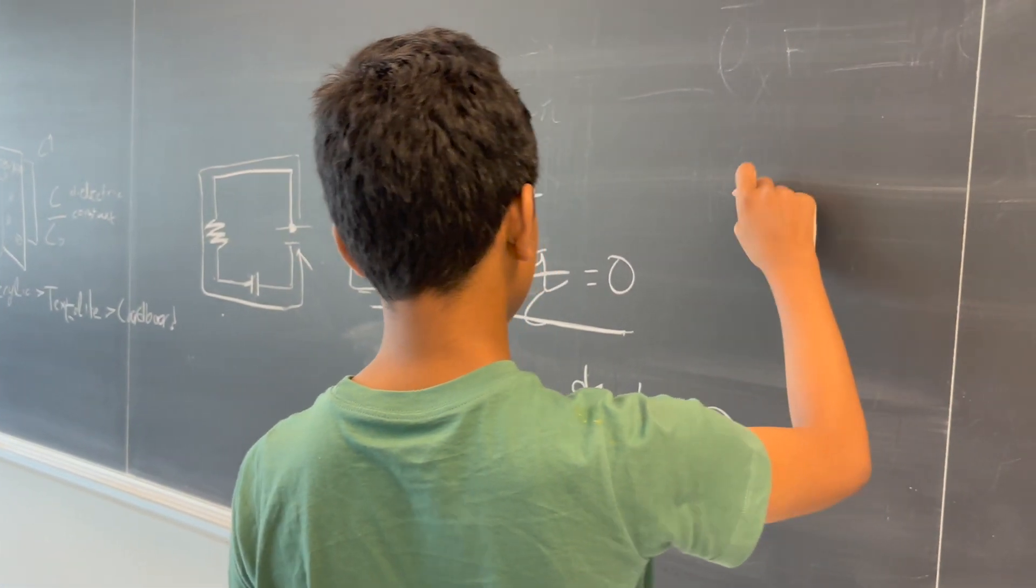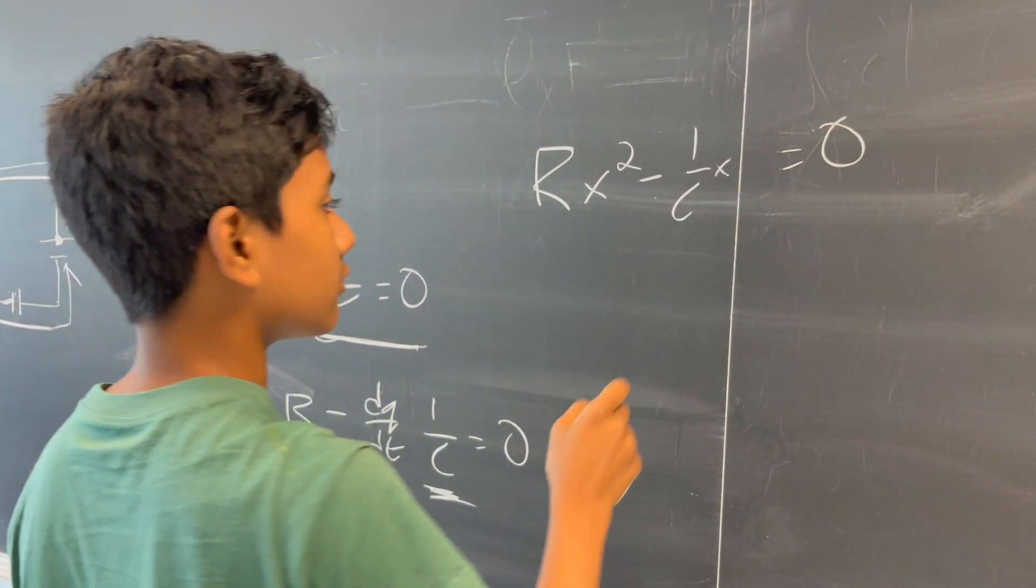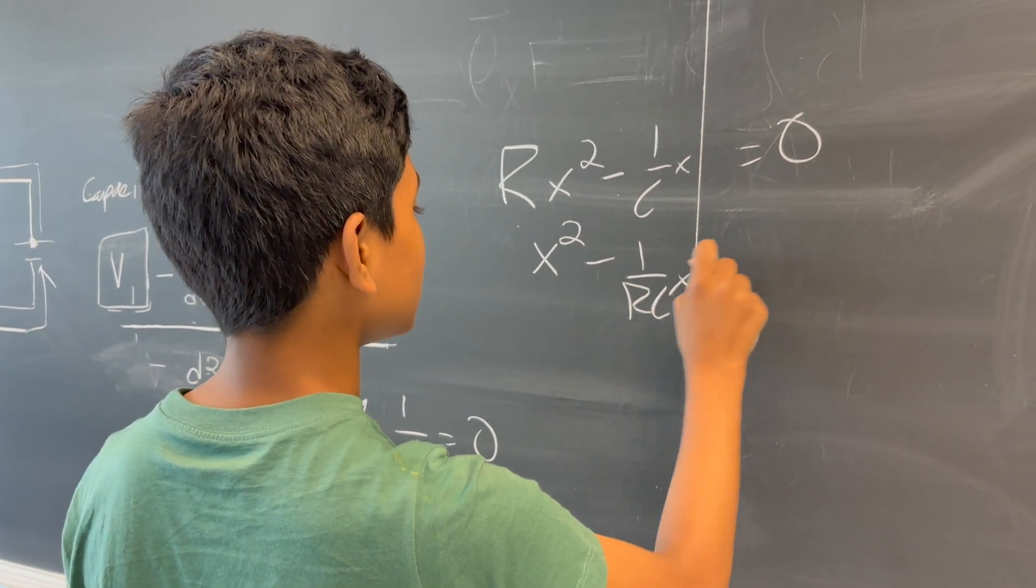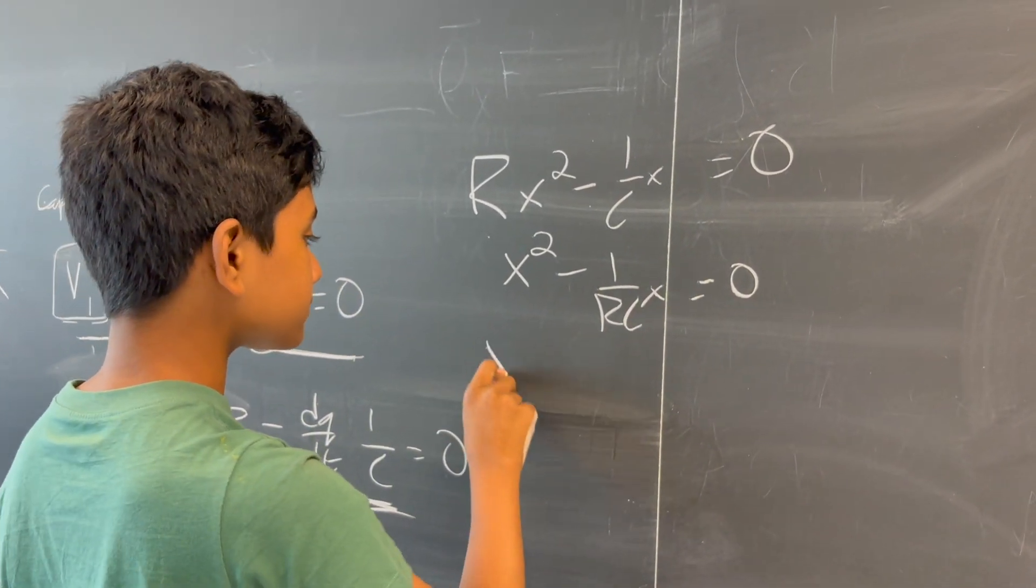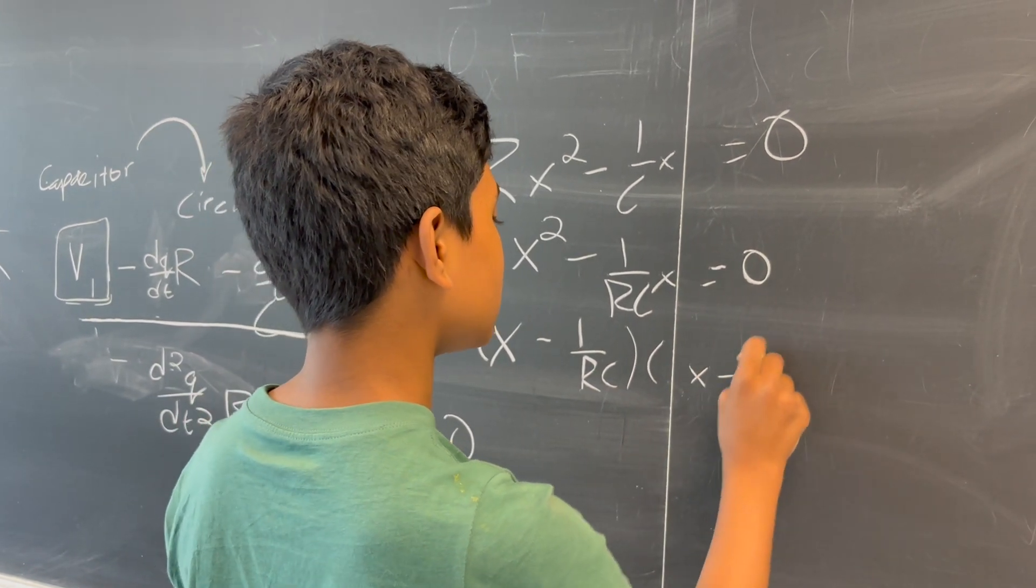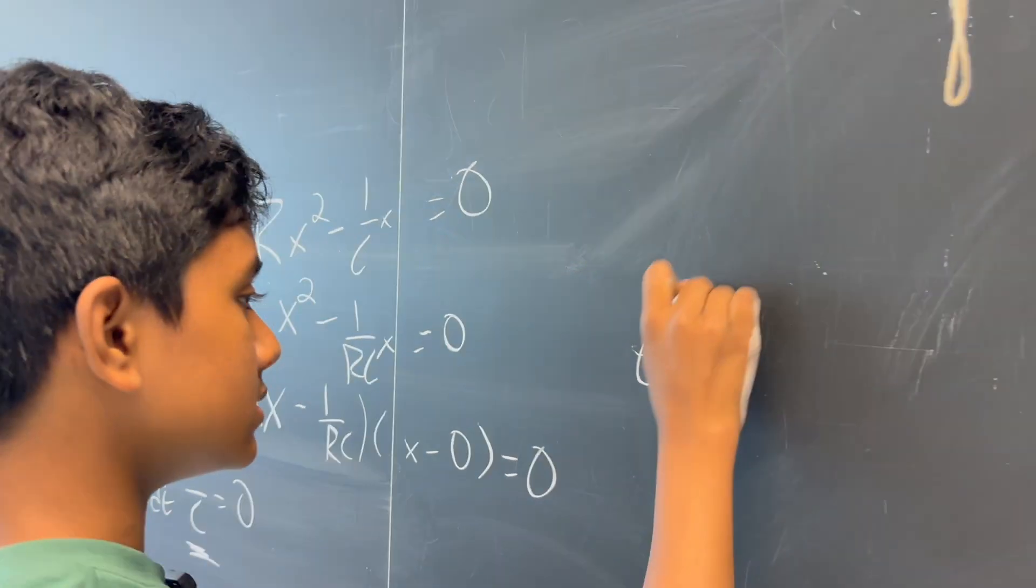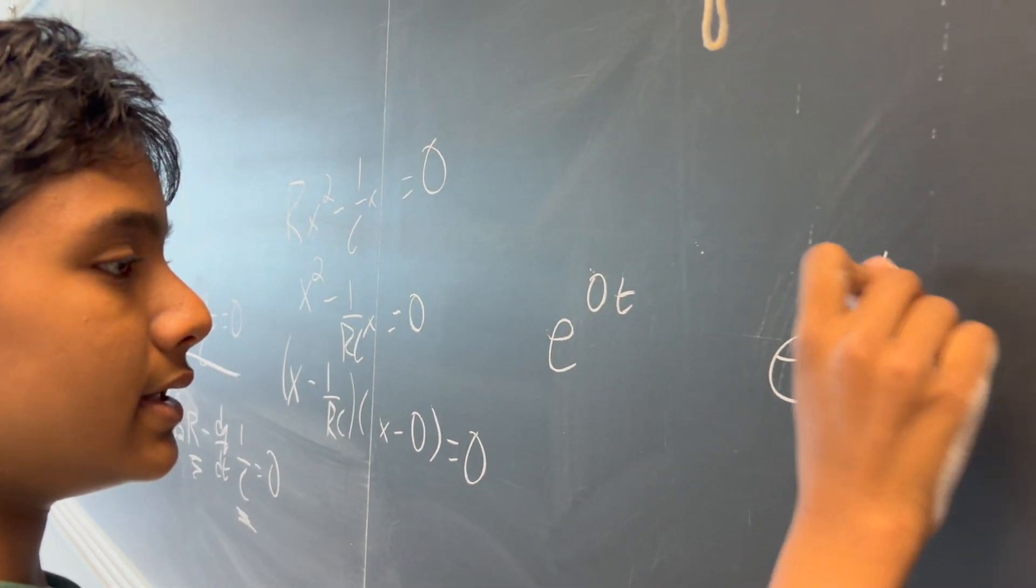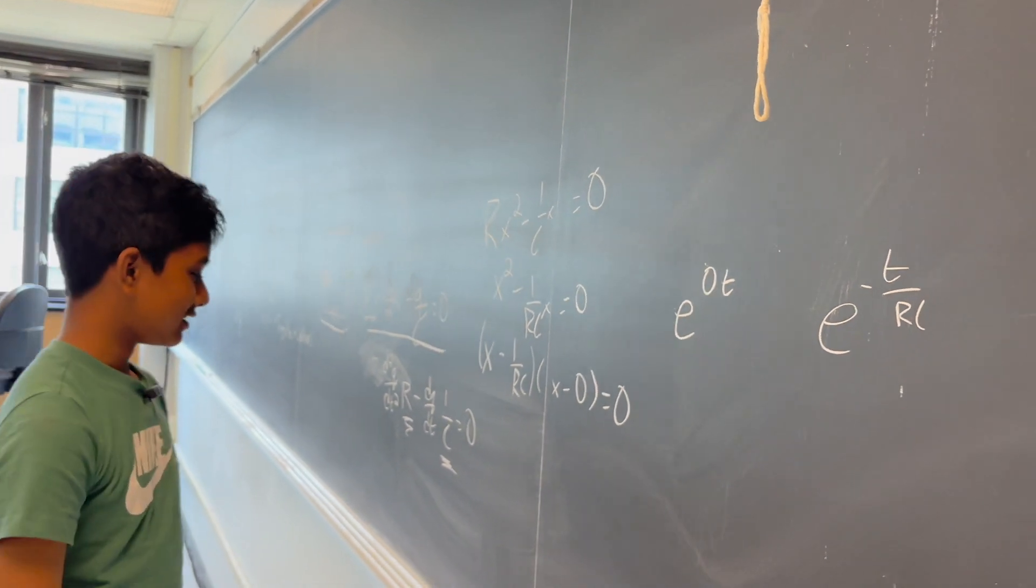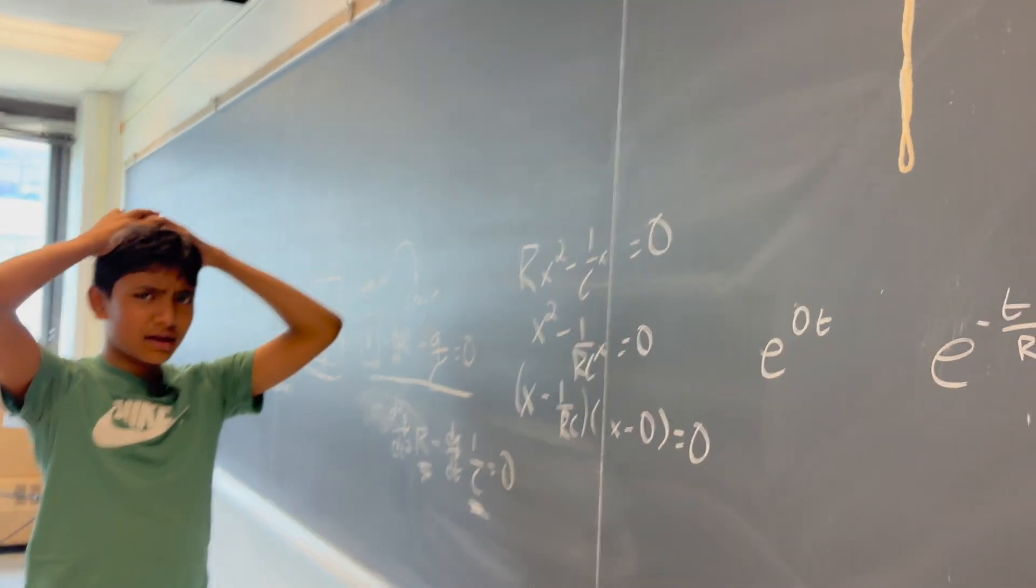So, how do we solve one of these? Well, what's our characteristic equation? It's going to be Rx squared minus 1 over Cx is equal to zero. How do we factor that? Well, we get x squared minus 1 over RCx is equal to zero, which means that we get x minus 1 over RC times x minus zero, which means our two solutions are e to the zero t and e to the t over RC.